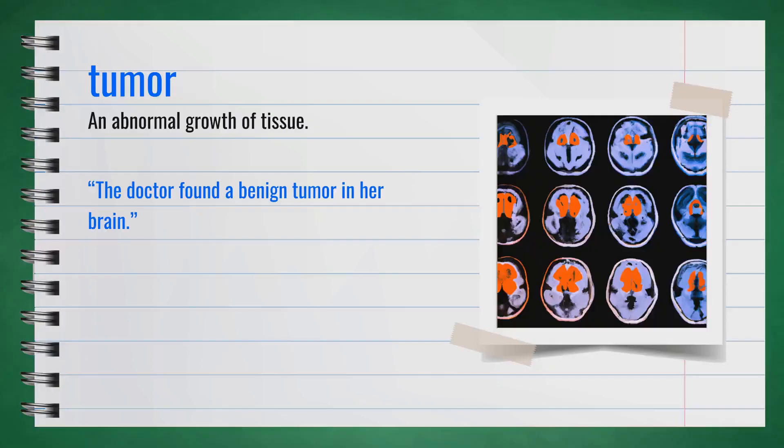The word tumor, spelled T-U-M-O-R, is a noun. Synonyms include growth and mass. For example, the doctor found a benign tumor in her brain. A tumor is an abnormal growth of tissue.